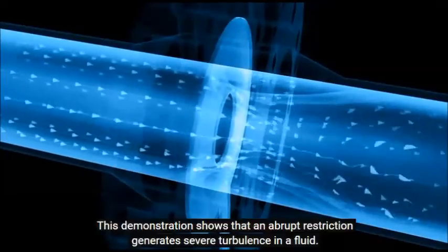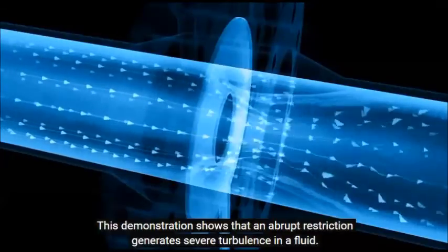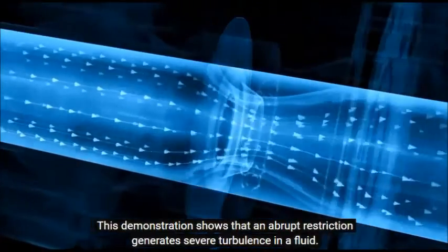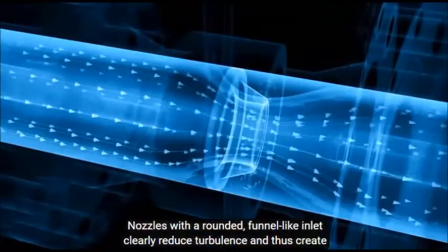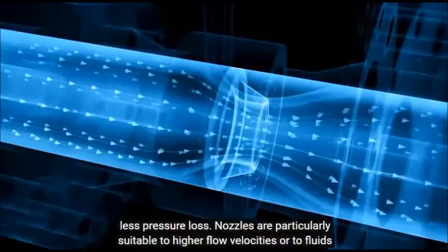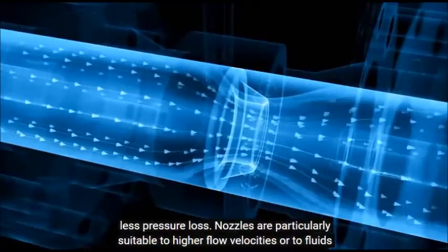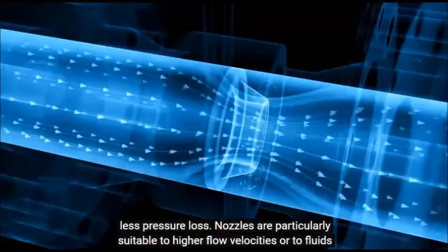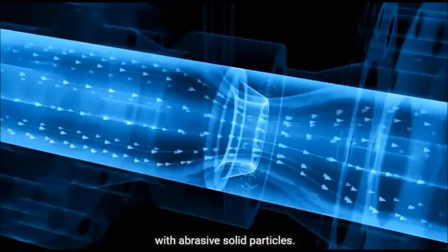This demonstration shows that an abrupt restriction generates severe turbulence in a fluid. Nozzles with a rounded funnel-like inlet clearly reduce turbulence and thus create less pressure loss. Nozzles are particularly suitable to higher flow velocities or to fluids with abrasive solid particles.